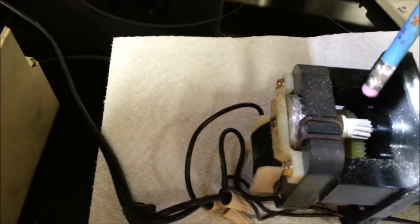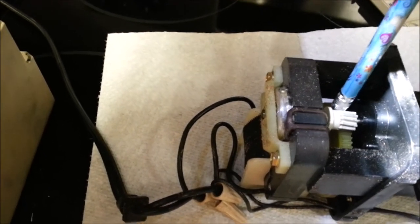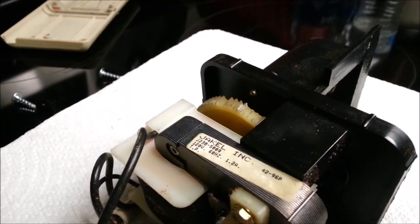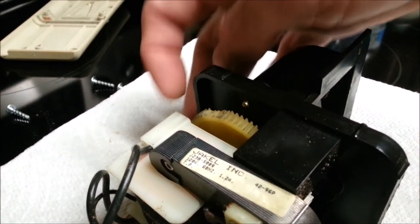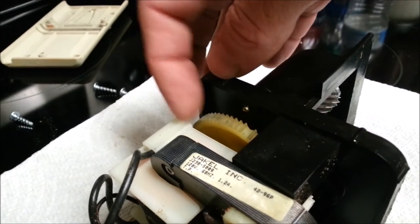Alright, so that gear is moving good. This gear is not moving so good. That's the problem. I see all those teeth that are broke off of that gear. When it gets to right there, it just spins because it won't turn this big gear.